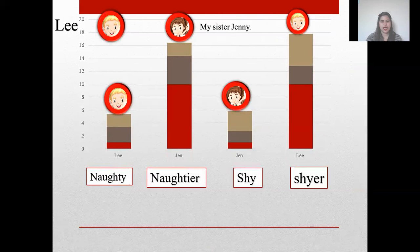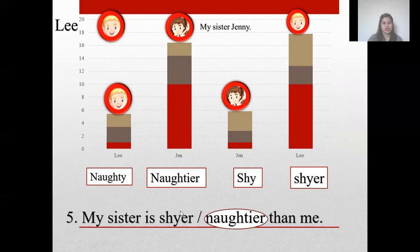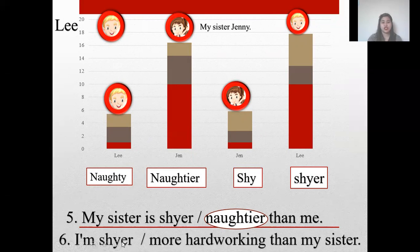Number 5 — naughty or shy, shyer? My sister is naughtier than me. What is your answer? Naughtier. My sister is naughtier than me. Number 6 — I'm shyer or more hard-working than my sister. What is your answer? Shyer. Lee is shyer than Jen. I'm shyer than my sister.